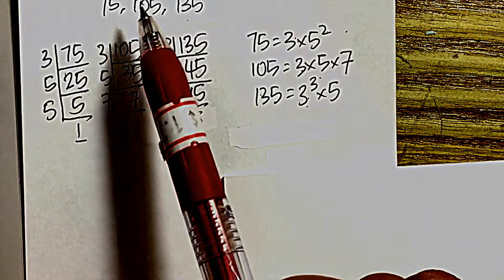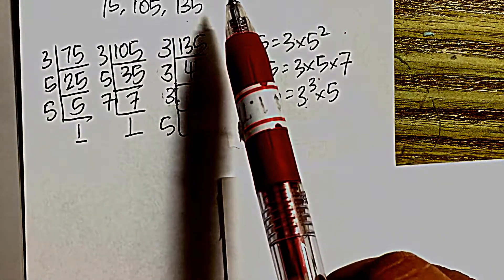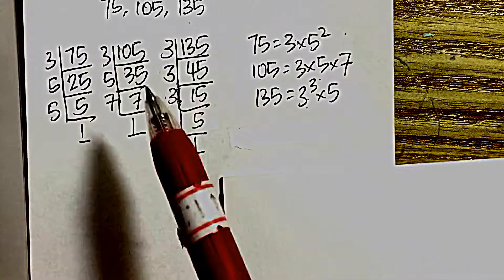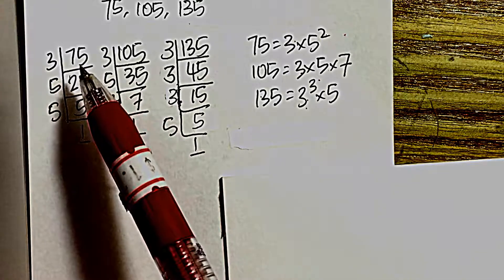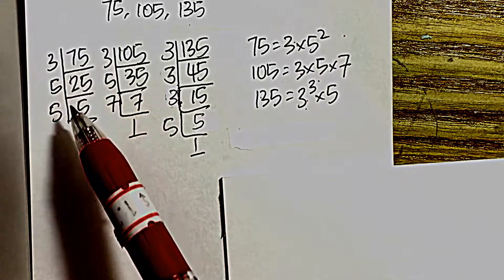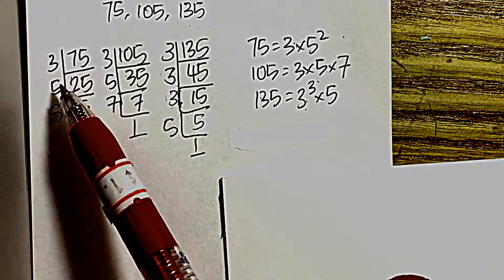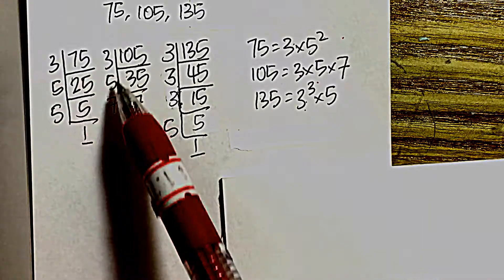To find the highest common factor and lowest common multiple of the three numbers, first we will use repeated division to help us find the prime factors that make up each of these numbers.